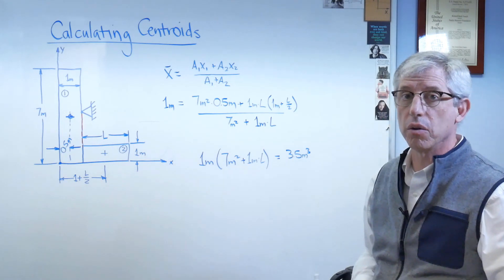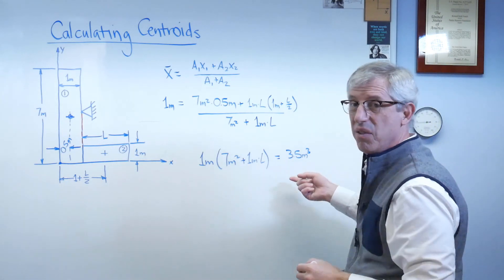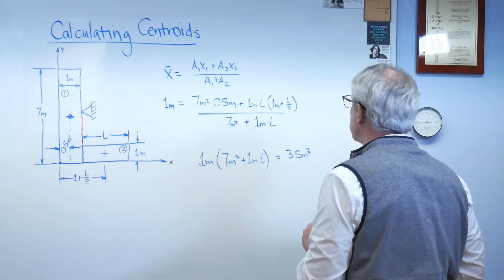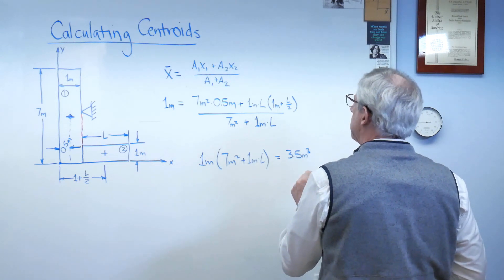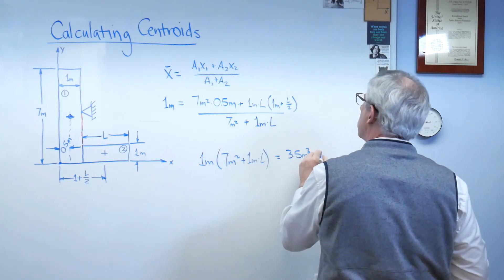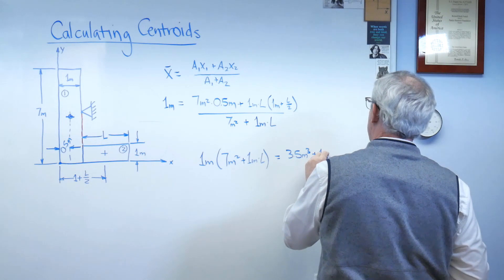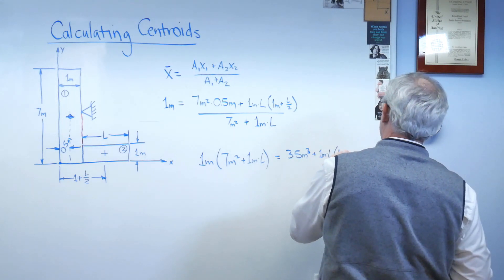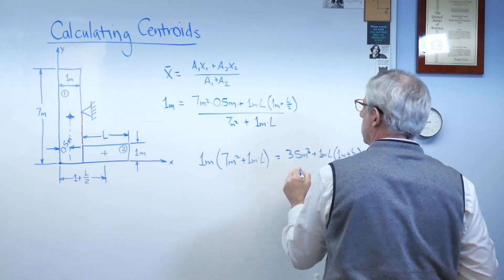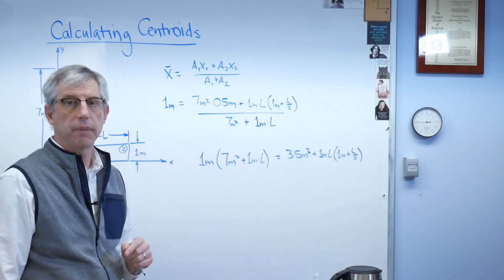Now, meters cubed, it's not a volume. It's an area times the distance, even though it looks like it's got the units of volume. So there's that plus 1 meter times l, 1 meter plus l over 2.